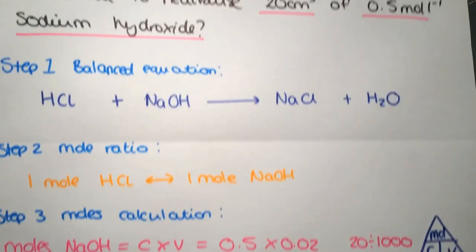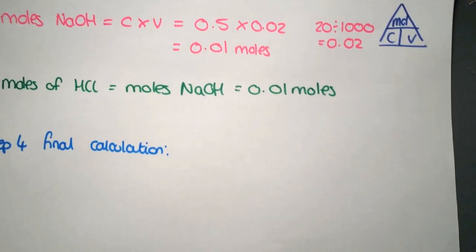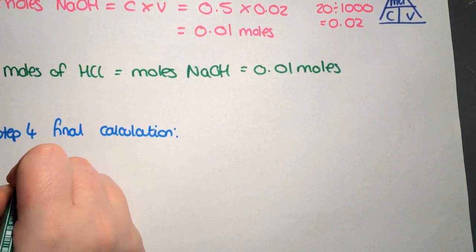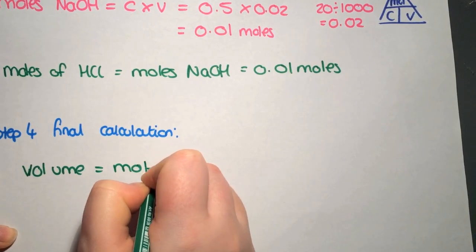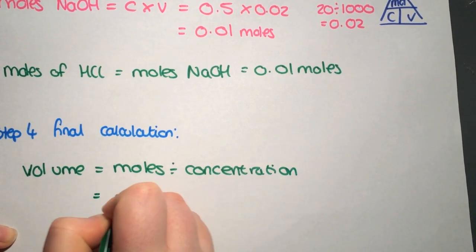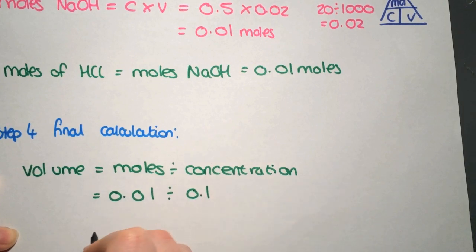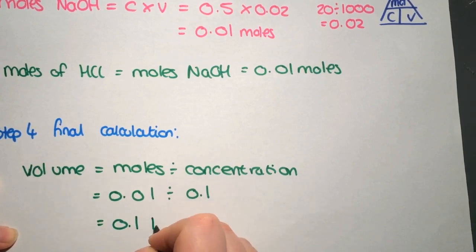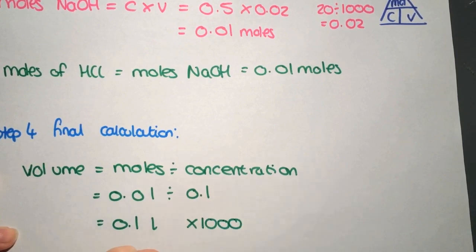The final step is to calculate the volume of hydrochloric acid. We have a concentration and we now have the moles, so we rearrange the triangle: volume equals moles divided by concentration. The moles are 0.01 and the concentration is 0.1, giving a volume of 0.1 litres. If you want it in centimetres cubed, multiply by 1000 — that gives you 100 cm³.